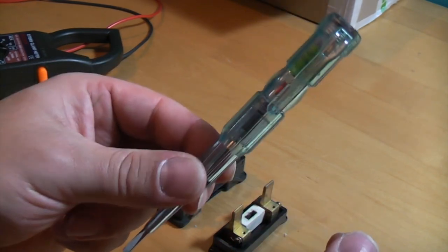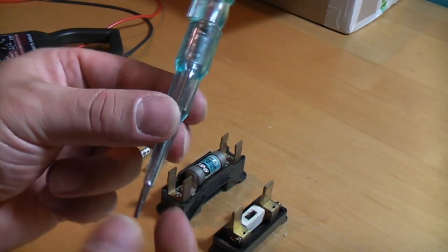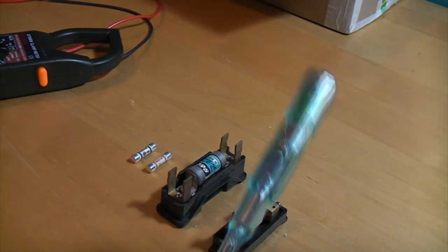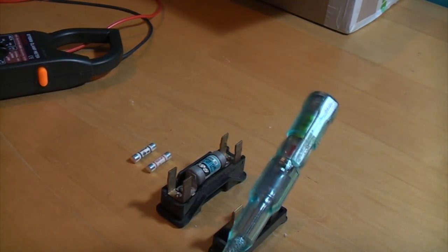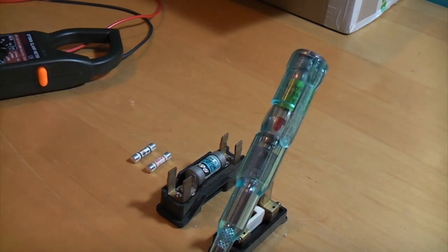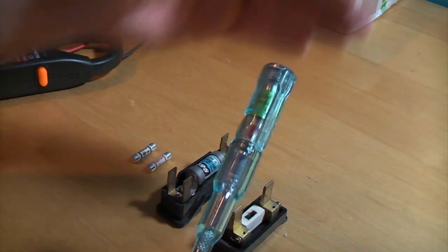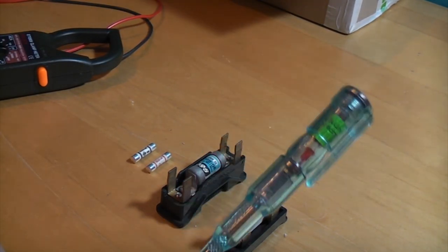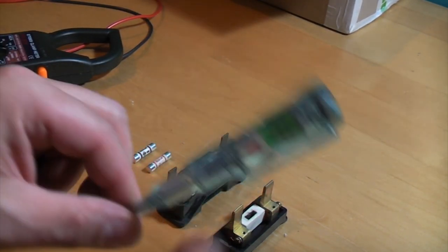But this one's pretty unique because rather than using it for electrical testing, you can actually use it a couple of different ways. If you hold it by the tip there and put it near something that is live, it actually illuminates in there, telling you that it's live. So you're not actually touching the thing that's live, so it's like a non-contact voltage detector, really.